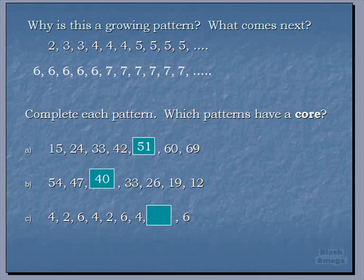We have 4, 2, 6, 4, 2, 6, 4, blank, 6. Growing pattern or shrinking pattern? What's that? It is a repeating pattern. Why? What is the core? If this is a repeating pattern, what's our core? That's right, the core is 4, 2, and 6, because that is always repeating itself.